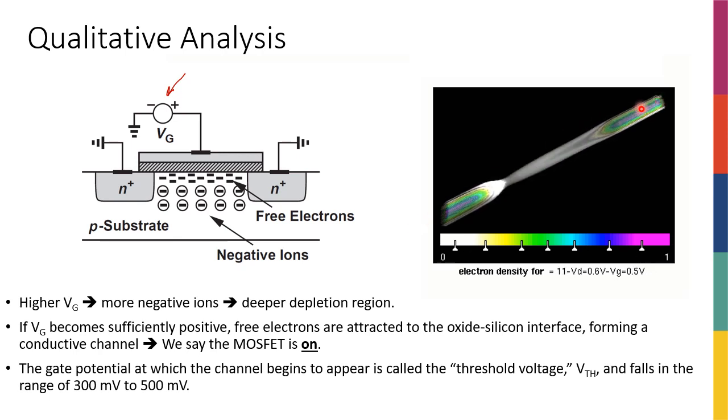We have a channel of free electrons between the drain, let's say on this side, and the source on the other side. Of course, this video is actually a little bit tilted, but you can imagine that if you rotate it by like 45 degrees, you'll have the same kind of horizontal channel that you have here.